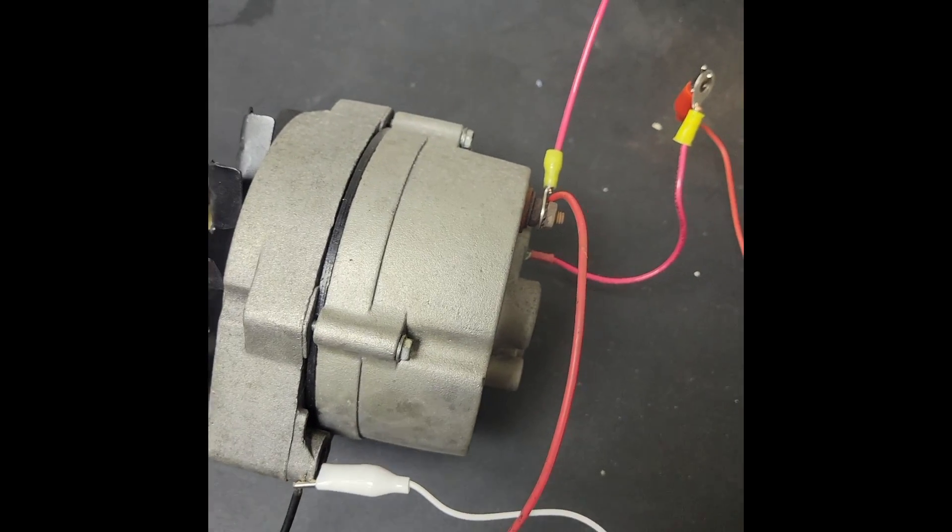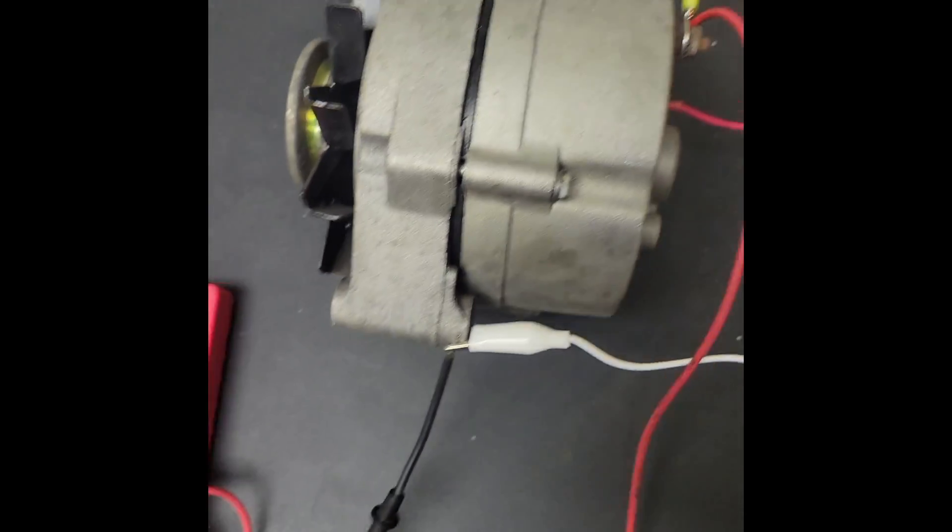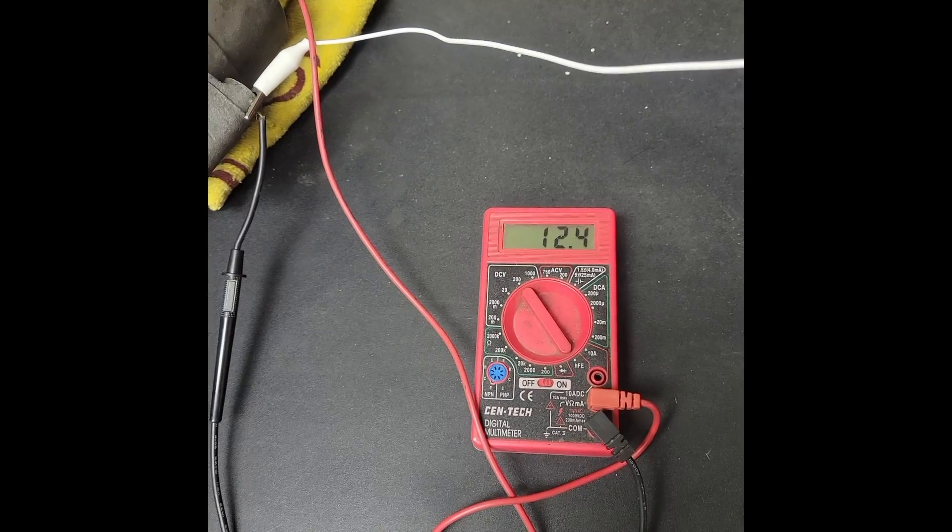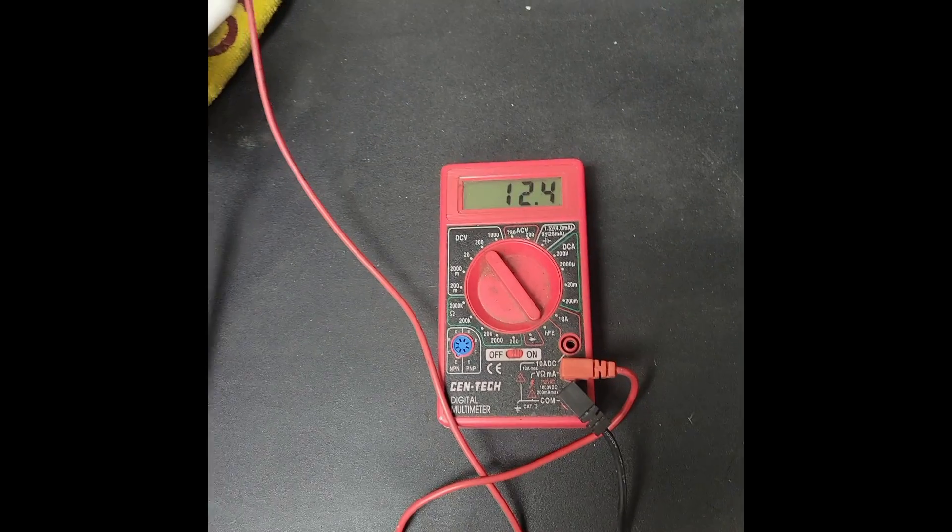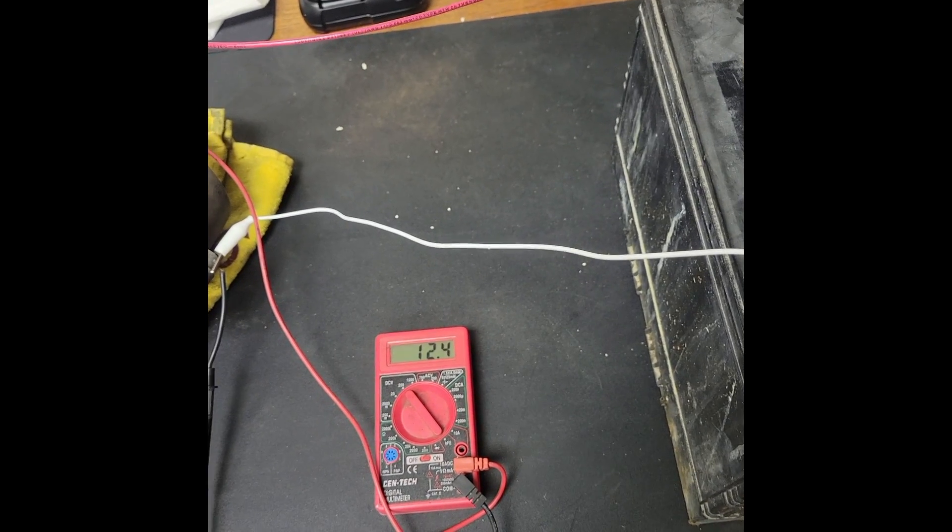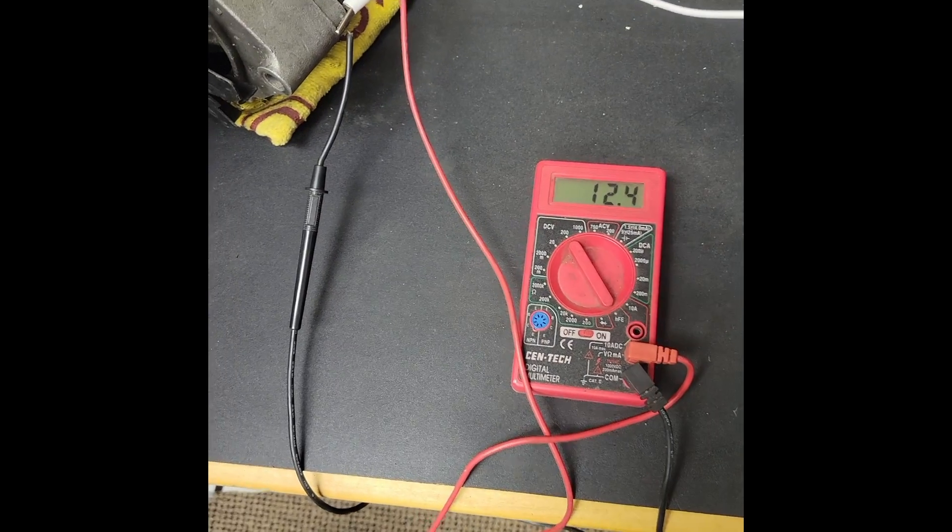Let's go ahead and turn on our voltmeter. We see we are running 12.4 volts - that is on the battery itself. We will start spinning this, and as it's turning I will keep the camera on the voltmeter and show the terminal attached to the positive terminal. Let's go ahead and start.